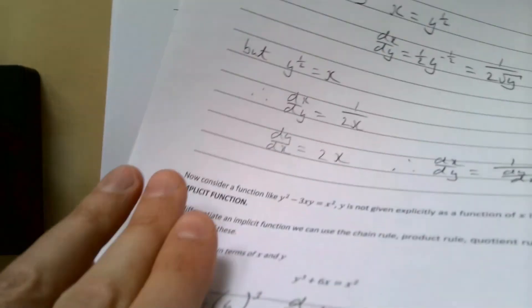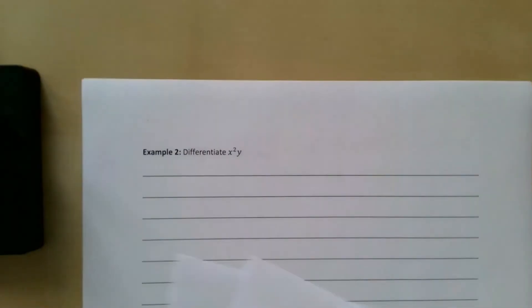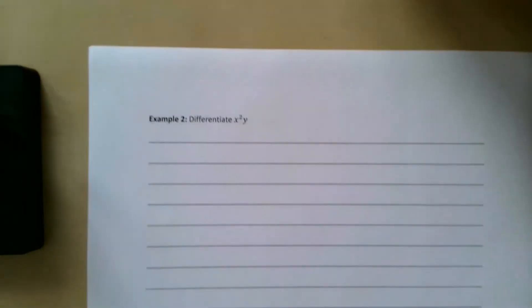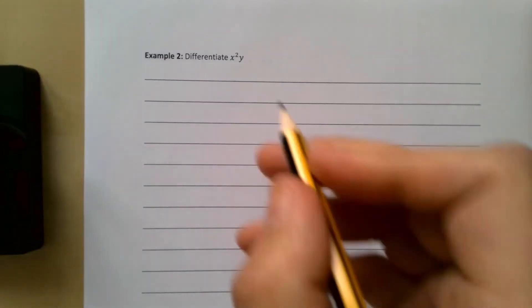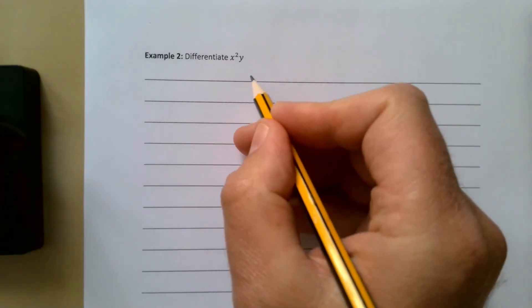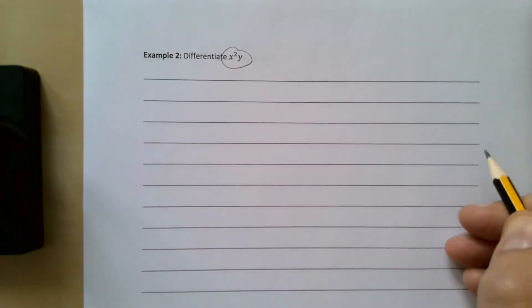Let's take a look at our next example. Differentiate x²y. Differentiating x²y is straightforward, but note here these two things are multiplied together, so we're going to have to use the product rule.